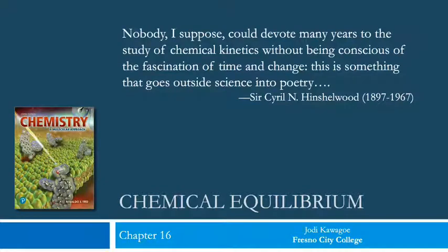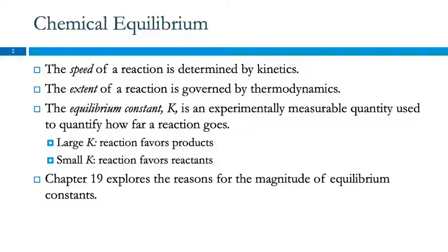Chapter 16 is chemical equilibrium. The speed of a reaction is determined by kinetics — that's what we covered in the previous chapter, how fast a reaction goes and how speed changes with other factors. The extent of a reaction, how far it goes, is governed by thermodynamics. The equilibrium constant, which has the symbol capital K, is an experimentally measurable quantity used to quantify how far a reaction goes.